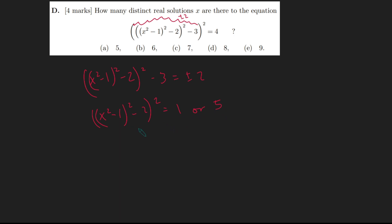Okay, that's cool. Now we can take care of this squared here by square rooting both sides and taking into account negative solutions as well. So x squared minus 1 squared minus 2 would have to be plus or minus 1 or plus or minus root 5.